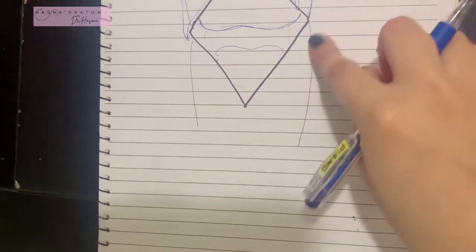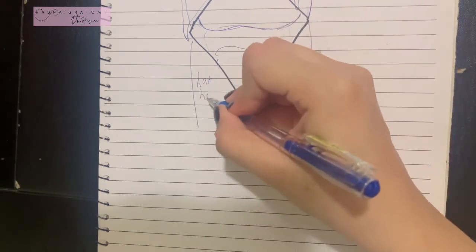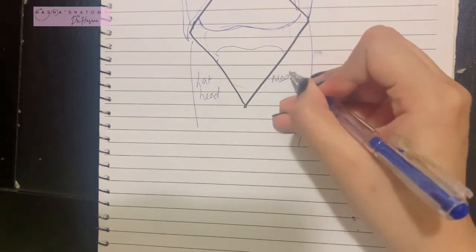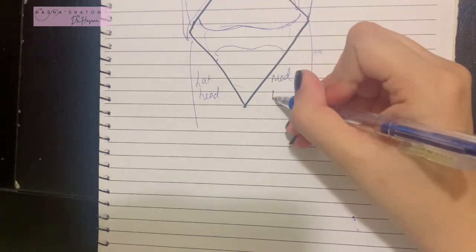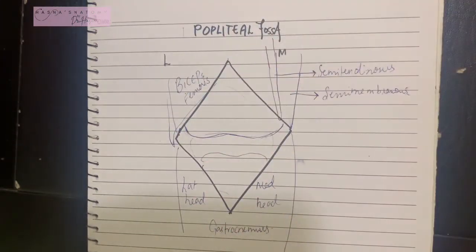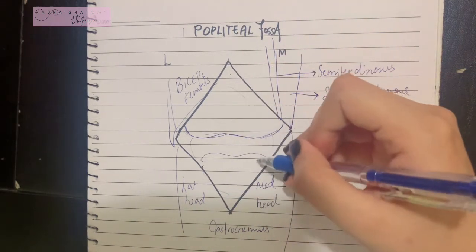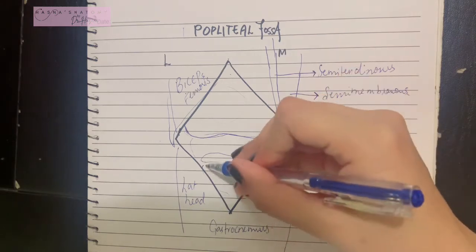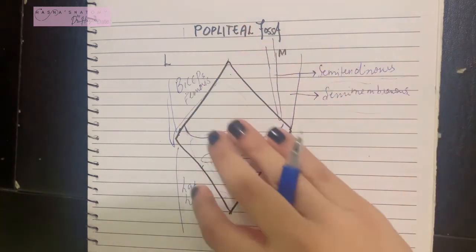The gastrocnemius is the major muscle forming the inferior boundary. The lateral head and the medial head of the gastrocnemius form the lower or inferior boundary of the popliteal fossa. The roof of the fossa is formed by the deep fascia known as the popliteal fascia, and the floor is formed by the popliteal surface of the femur, the capsule of the knee joint, and the fascia covering the popliteus muscle.